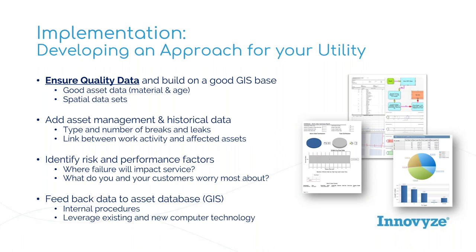Getting asset management and historical data into the fold is key in implementation — things like the number of breaks in a system, number of cave-ins, number of leaks, depending on whether you're running water or wastewater. You really need to establish a link between work activity and affected assets. If you're not tracking the work you're doing in the field and bringing it back, you're really not getting the big picture. You have to have a process in place during implementation for linking those things and then identifying risk and performance factors. We can run analytics to help you determine where failure is going to impact service — that is super critical.